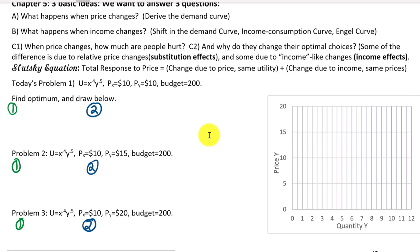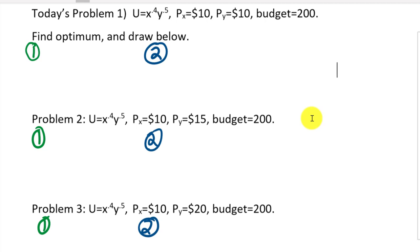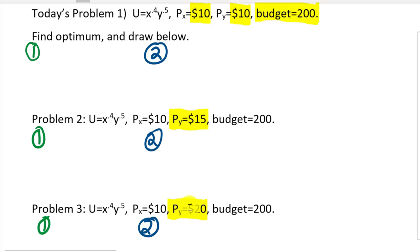Here's the problem we're focusing on: utility function u = x^0.4 * y^0.5, starting with Px = $10, Py = $10, and budget = $200. Ceteris paribus, we'll change the price of y to $15 and then $20 to see what happens. We're deriving the demand curve for y by changing only the price of y and observing how quantity demanded changes.